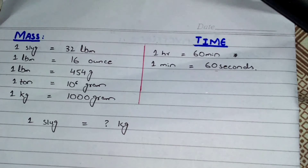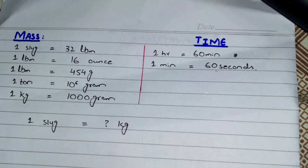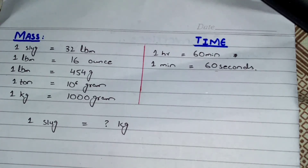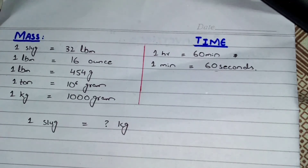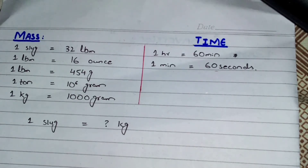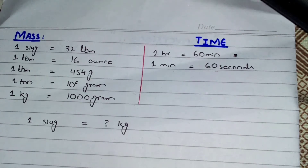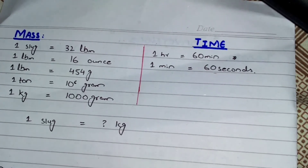Our first question is: how many kilograms are there in one slug? We have already discussed the method of converting these units in the previous video, where we covered units of volume and distance. In this video we will discuss mass and time units. The first question is how many kg will be there in one slug.